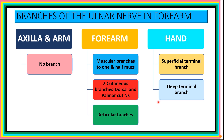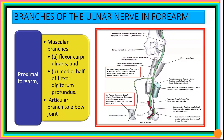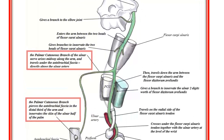In the proximal part of the forearm, the muscular branches supply flexor carpi ulnaris and the medial half of flexor digitorum profundus. Also arising here is the articular branch to the elbow joint.